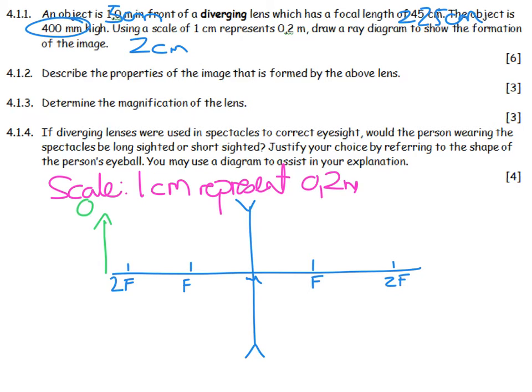You're then going to bring in a line until it meets that diverging lens, and then as if it came from F, it diverges. Do not forget arrows. Then you go through M, do not forget an arrow.